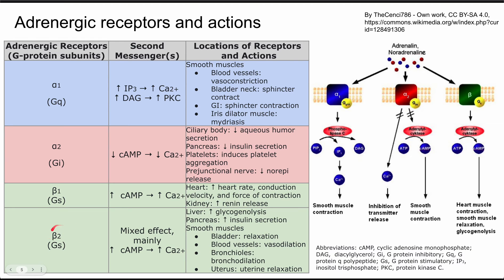Lastly is beta-2, which is also a G-stimulatory protein. It has a mixed effect on second messengers: the main effect is increased cyclic AMP with increased calcium ion concentration, but there is some influence from other second messengers as well. In the liver, this results in increased gluconeogenesis. In the pancreas, increased insulin secretion. In smooth muscles, you get relaxation — bladder relaxation, vasodilation with decreased blood pressure, bronchodilation useful in asthma or COPD, and uterine relaxation.